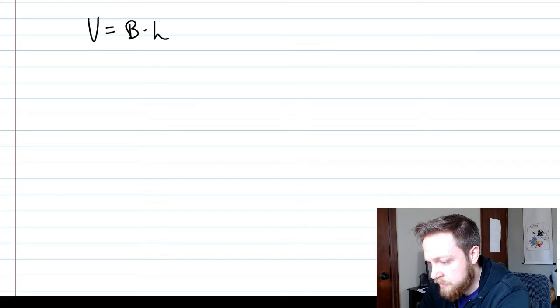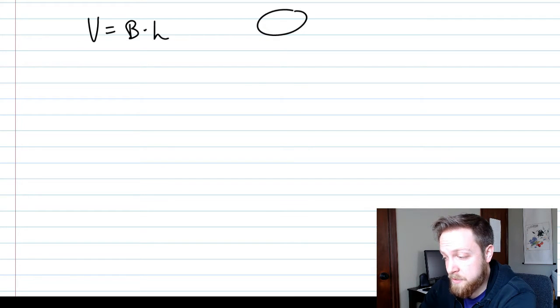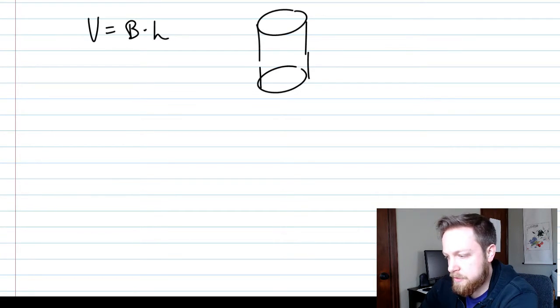Okay, I already wrote the volume formula for a cylinder. This is actually for any prism figure. Prism means that you have the same base on top and on bottom, and you connect them together like this. So there is my very bad, badly drawn cylinder.